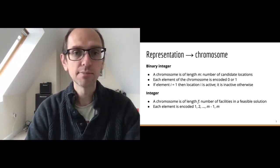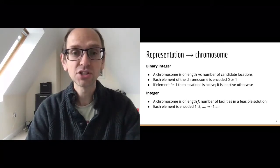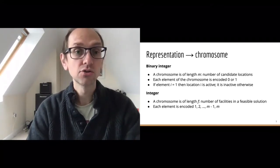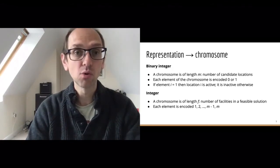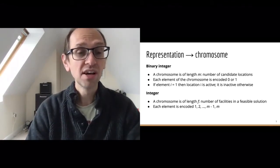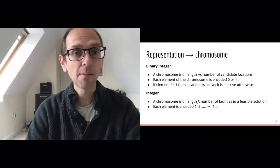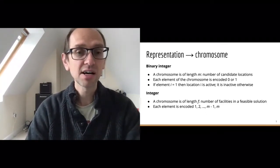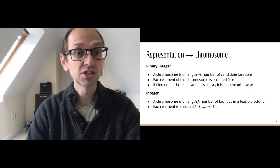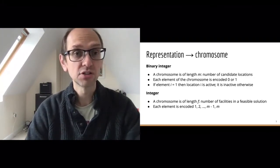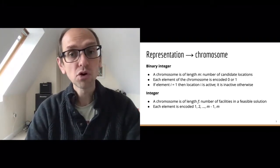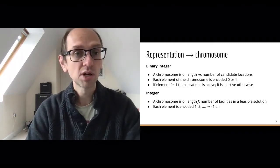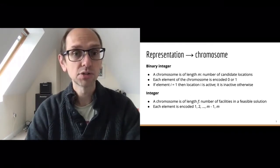In a binary chromosome, the array has the same length as the number of candidate locations M. Each element is encoded as zero or one — if it's a one, we're placing a facility at that location. So if facility five is encoded as one, that facility is active in the solution; if facility four is coded zero, we are not using it in that particular solution.